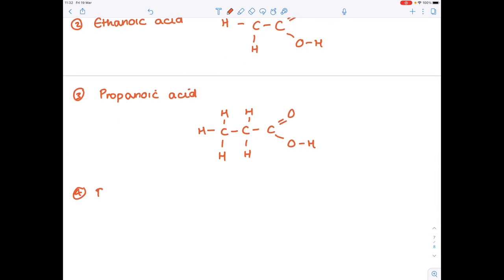The fourth one, butanoic acid. We're going to have four carbons in a chain. Add the functional group. Complete the hydrogens. And we're done.